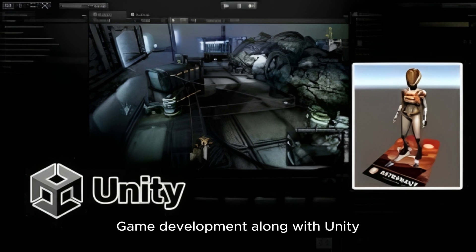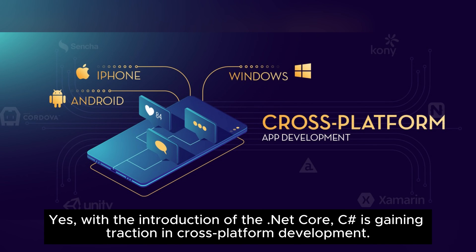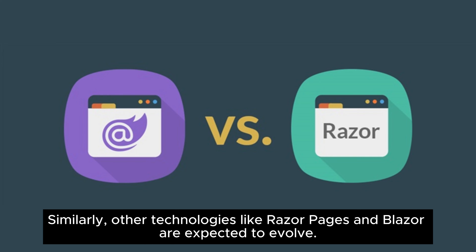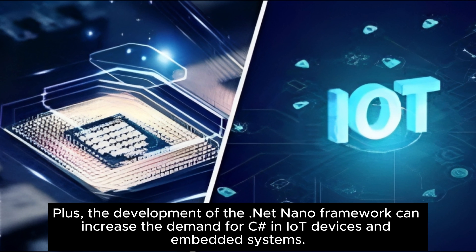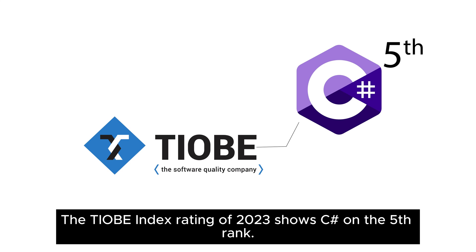Game development along with Unity. Is C# still relevant in 2023? Yes — with the introduction of .NET Core, C# is gaining traction in cross-platform development. Similarly, other technologies like Razor Pages and Blazor are expected to evolve. Plus, the development of the .NET Nano Framework can increase the demand for C# in IoT devices and embedded systems. The TIOBE index rating of 2023 shows C# in fifth rank.